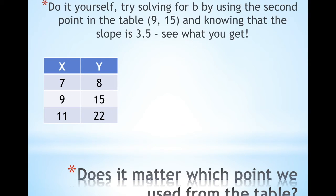Does it matter which point we use from the table? In the example I gave you, I used (7, 8). But what happens if I use any of the other points? I want you to try it yourself. Solve for B by using the second point in the table knowing that the slope is 3.5, and see what you get.